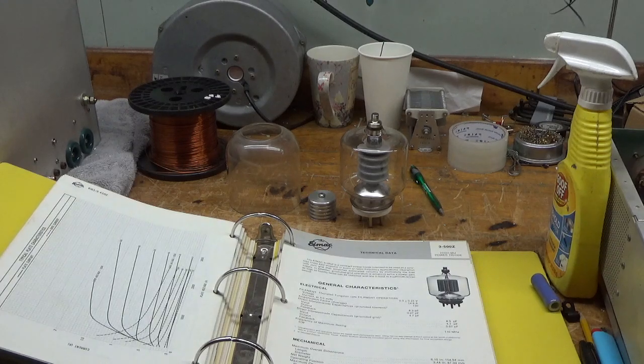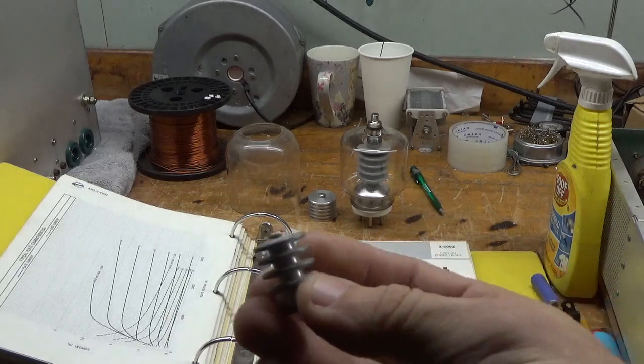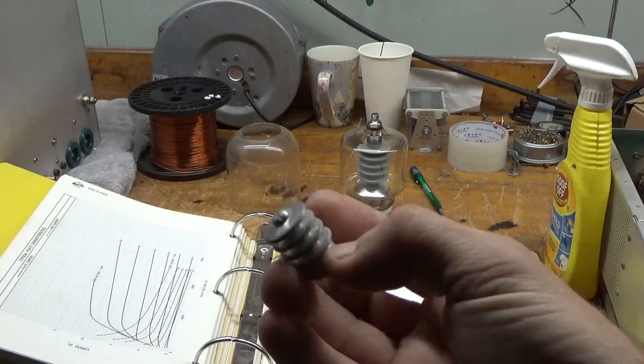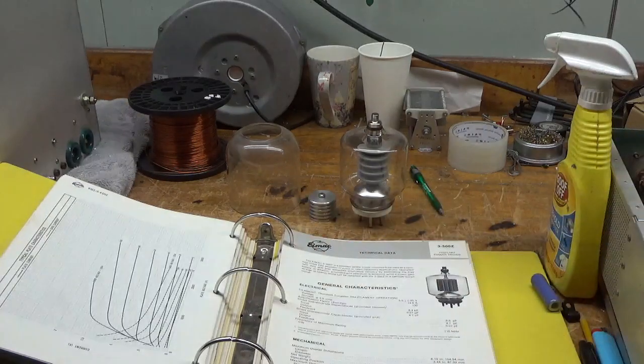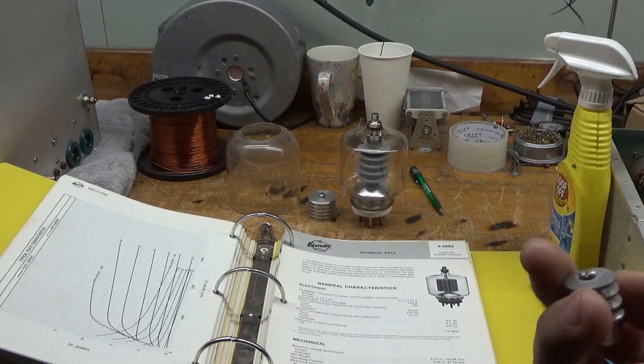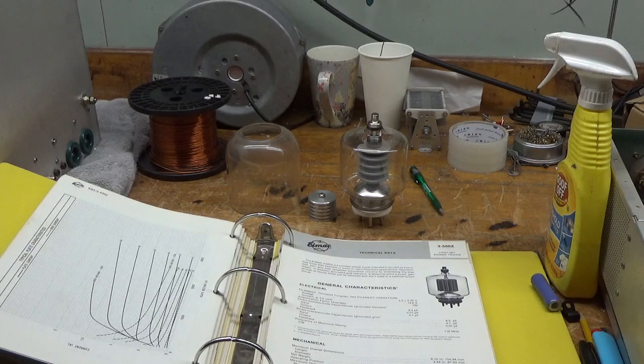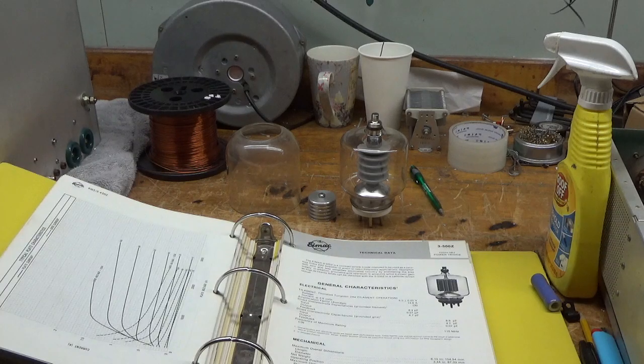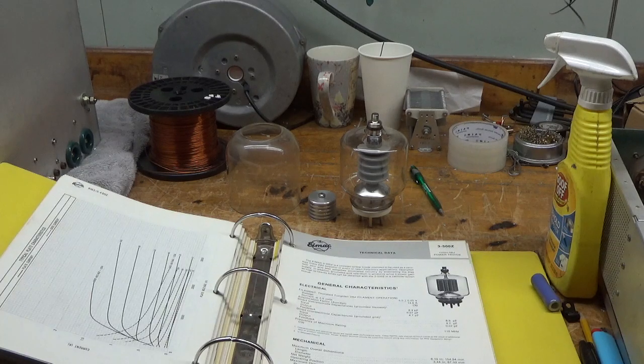Here's a stock anode cap from a 3500Z. From a Heathkit SB220. So I'm going to get back to work. Thanks for watching. Have a great day. AmpRepairGuy.com 203-892-4119